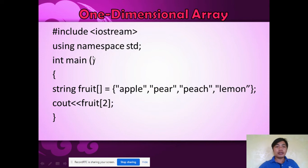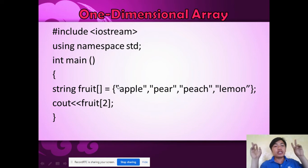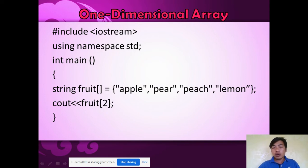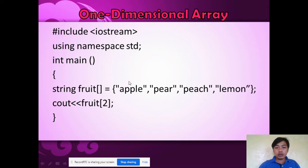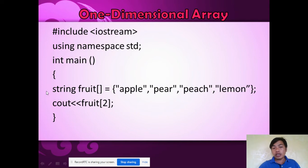Another example: a string type array named fruit, with elements apple, pear, peach, and lemon. We know it's a string type because of the double quotes — anything within double quotation marks is a string type. Now, the line of code fruit[2] means we are accessing index 2 of this array. Since arrays always start at 0 — apple is 0, pear is 1, and peach is 2 — the output would be peach.